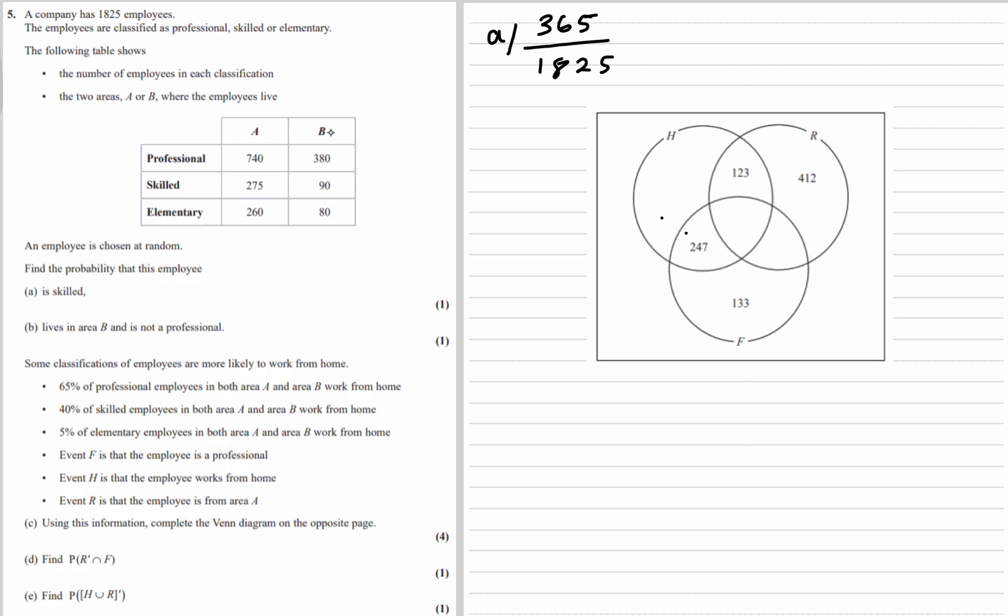And part B, live in area B and is not professional. That's the 90 and the 80. 90 and 80 make 170, again out of 1,825. I'm not going to simplify them, I don't have to, so I'll just leave them unsimplified.